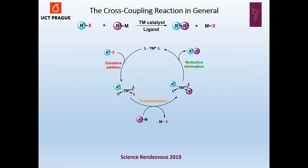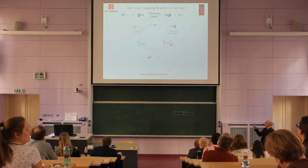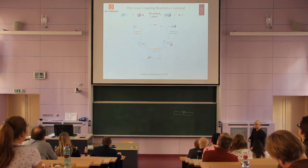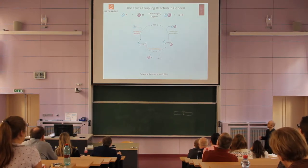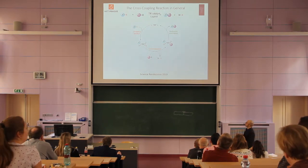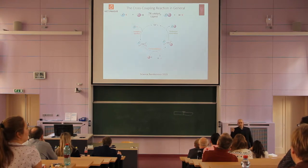A typical cross-coupling reaction follows this mechanism. The transition metal is inserted between the organic framework and a leaving group in a step called oxidative addition. Then the leaving group is displaced by a nucleophile, which is called the trans-metalation step. The mechanism is completed by reductive elimination, where the transition metal is abstracted from the complex to create the new bond.